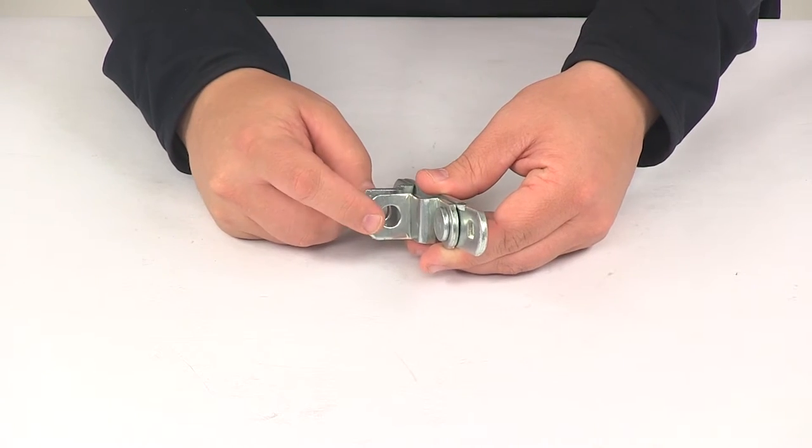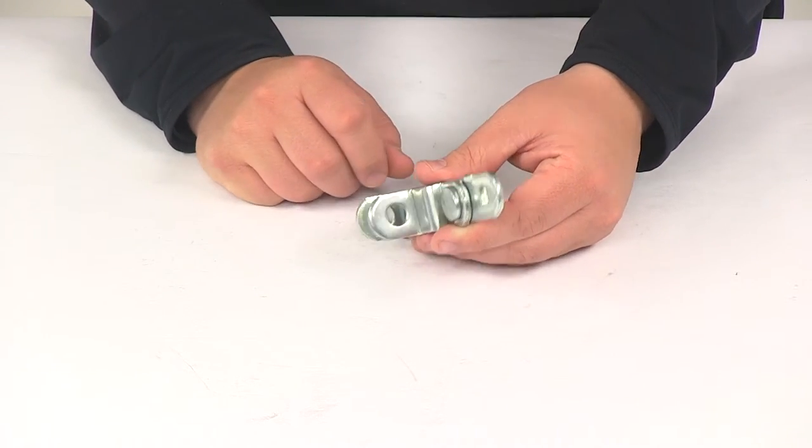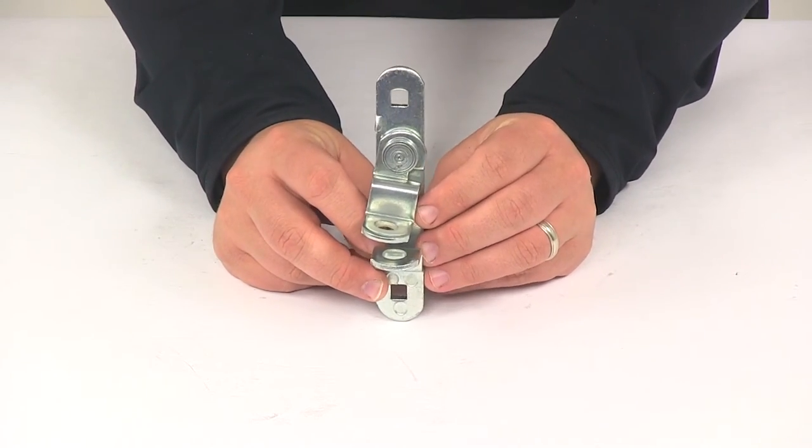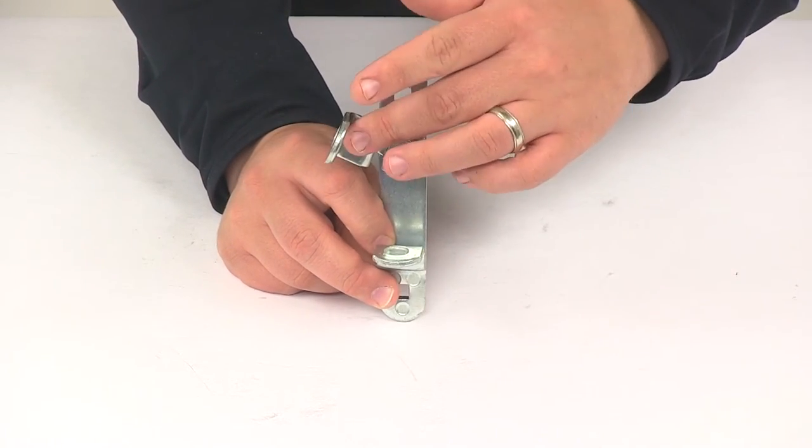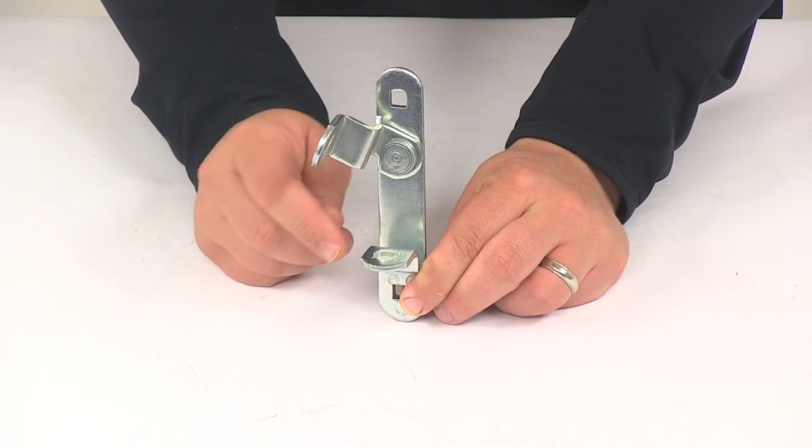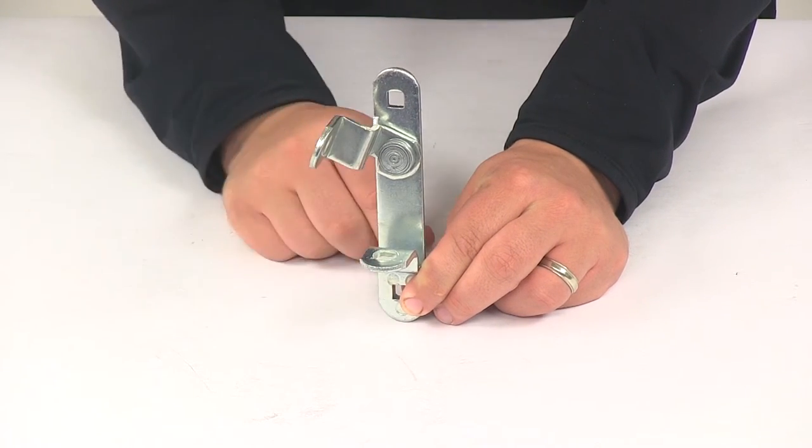The diameter of the holes right here on the latch is going to measure around a half inch in diameter. So you can see how this would get mounted, and then it's got the swivel design and the catch on it, so that way you can rotate the top portion out of the way, lift up on the handle, and then open your door.